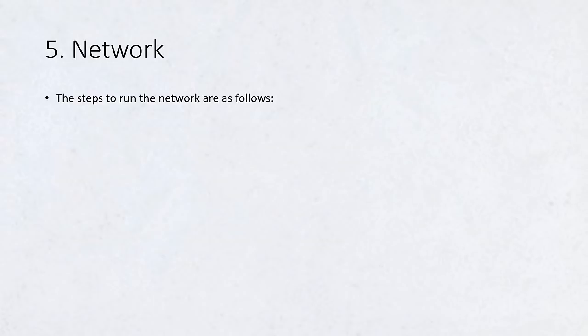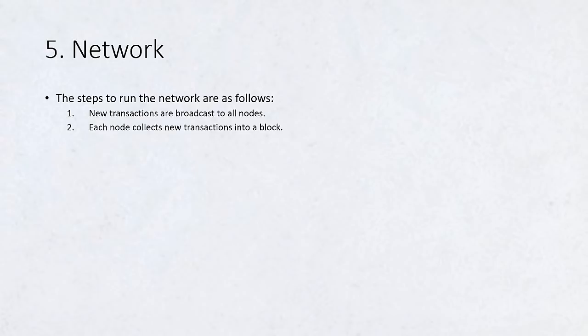Network. The steps to run the network are as follows: 1. New transactions are broadcast to all nodes. 2. Each node collects new transactions into a block. 3. Each node works on finding a difficult proof-of-work for its block.